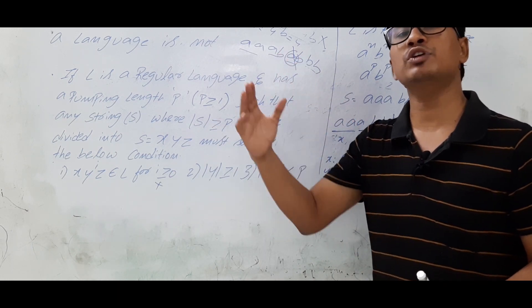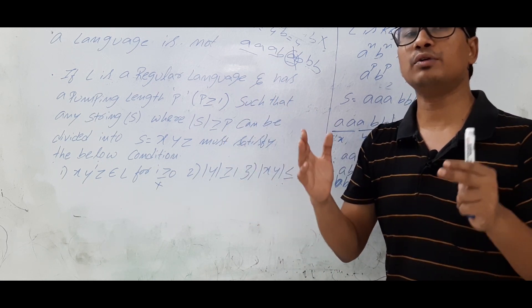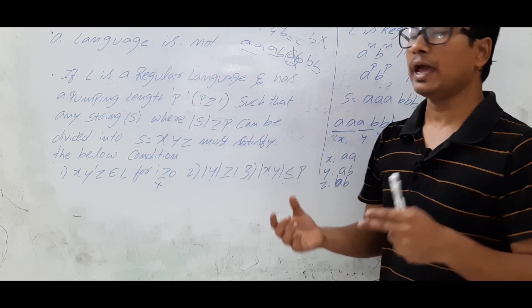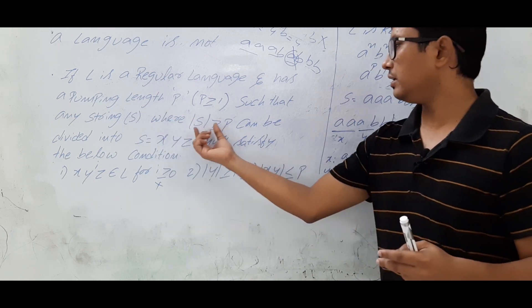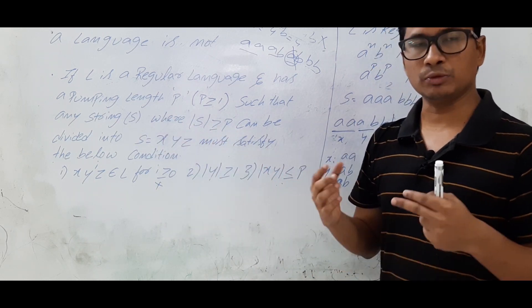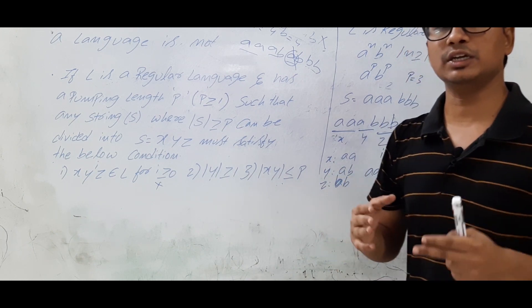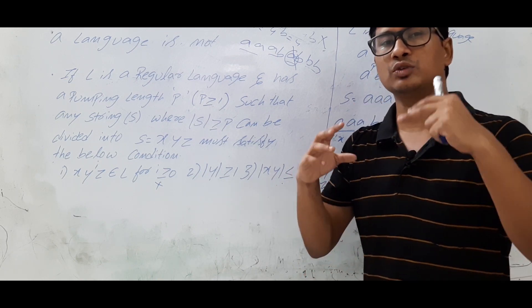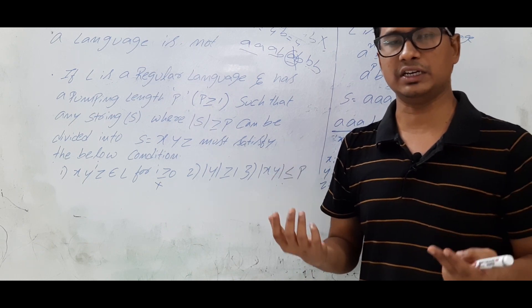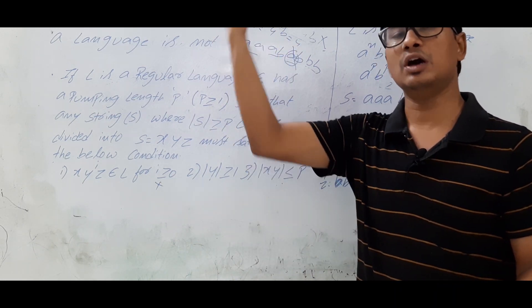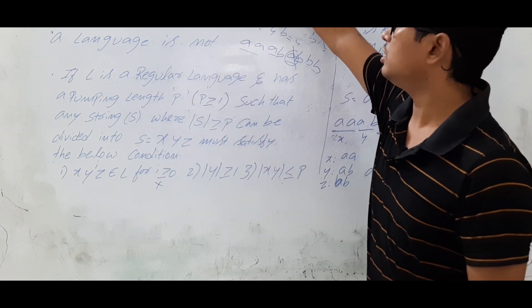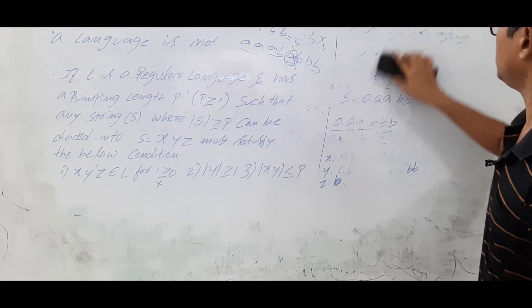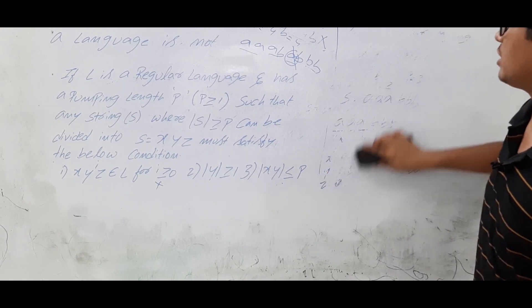For all combinations of xyz division, the conditions should be satisfied. If any one condition is not satisfied, I can prove that my assumption is wrong. My assumption was that L is a regular language. Since the conditions are not satisfied for all divisions, I can now prove that L is not a regular language. The proof is done by contradiction: I assumed L is regular, pumped it to pumping length p, took a string with length greater than or equal to p, divided into xyz, and showed the conditions fail.